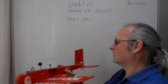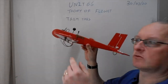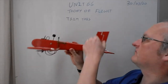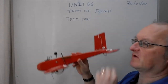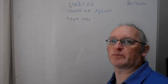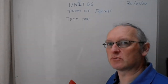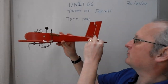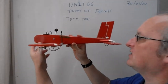You can find trim tabs on the ailerons, on the rudder, and on the elevators. The one I'm going to talk about is the trim tab found on the elevators, because it's the easiest one to explain.